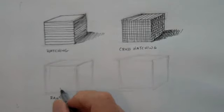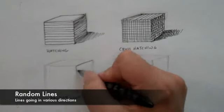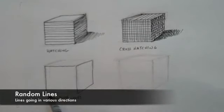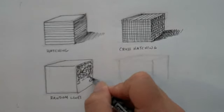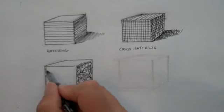Now if you decide to let the lines go a little bit crazy, you can create random lines to create value. And obviously the more those lines cross over each other, the darker the value is going to get.